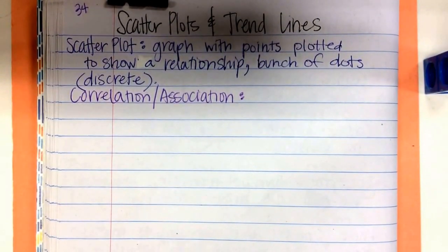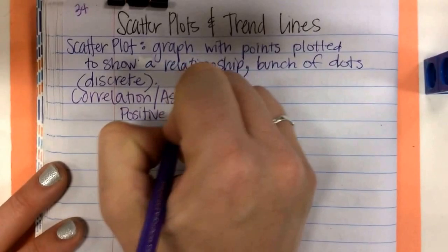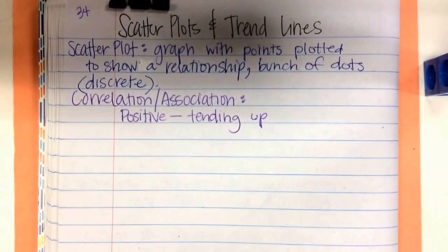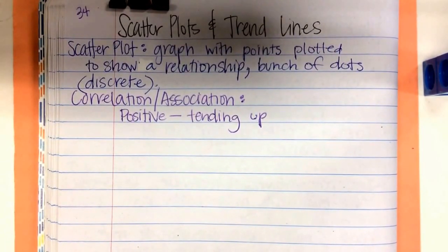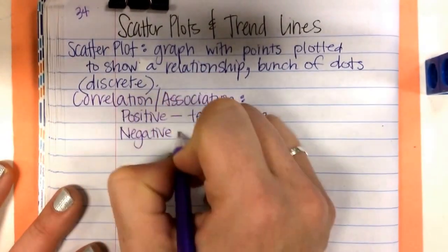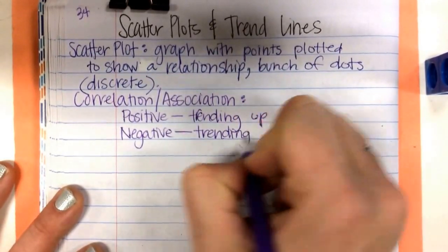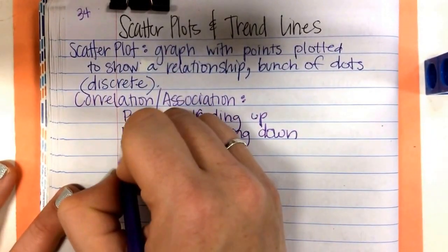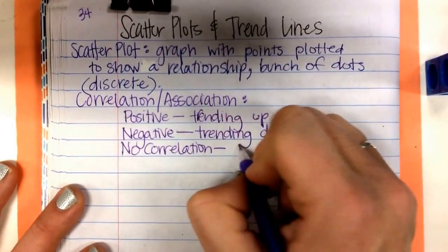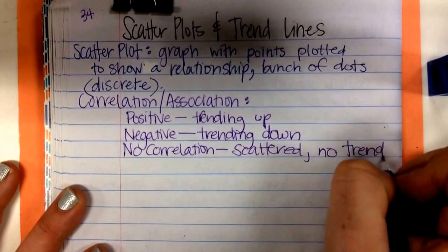And a correlation or an association can be positive, meaning it's trending up. It can be negative, meaning it's trending down. Or there can be no correlation, meaning it's just scattered. There's no trend.